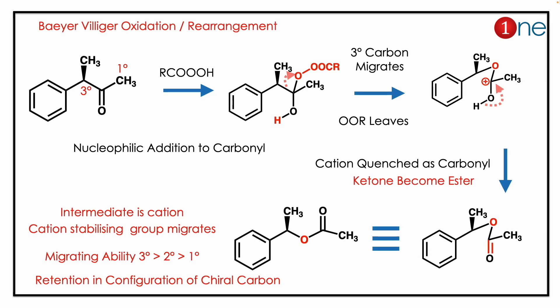Here you have a carbonyl and you are using the peracid — it's a Baeyer-Villiger oxidation, and it is a rearrangement reaction. The first step is nucleophilic addition to the carbonyl: H⁺ and RCO⁻ attack, and you have a new O-O bond formed.